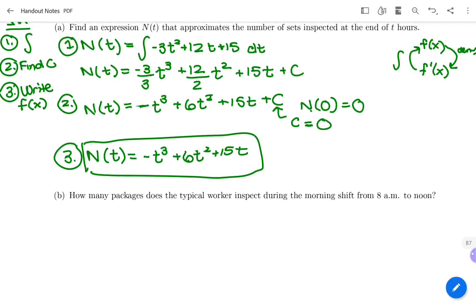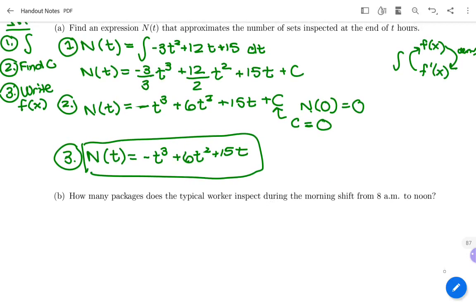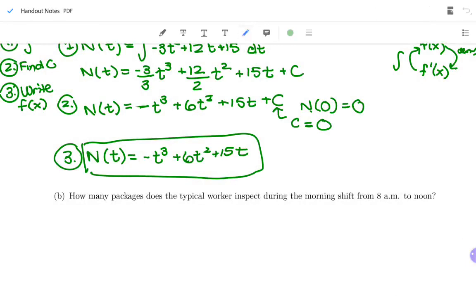The next part says how many packages does a typical worker inspect during the morning shift from 8 a.m. till noon? So how many hours have they worked if they work from 8 a.m. till noon? We know 8 a.m. is time 0, they haven't worked any hours yet. 1 hour later is 9, 2 hours later is 10, 3 hours later is 11, 4 hours later is noon. So they've been working 4 hours. I want to figure out how many packages they've inspected in the hours they've been working. They've been working 4 hours, and I want to find the number of packages they've been inspecting. Should I plug into N(4) or N'(4)?